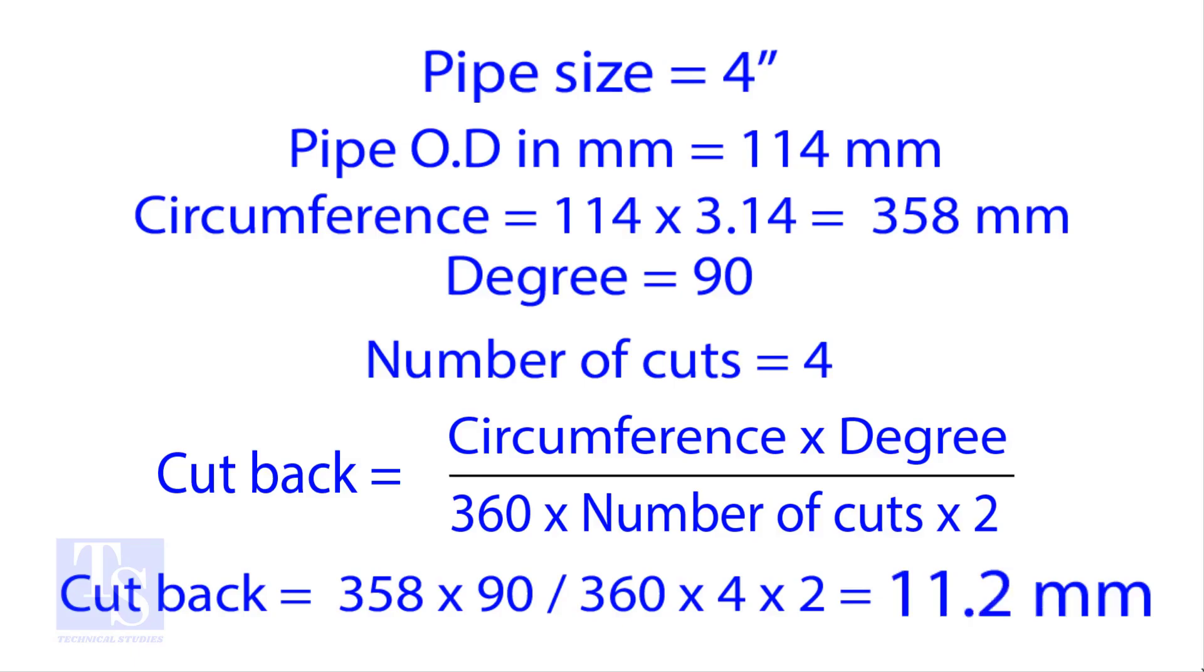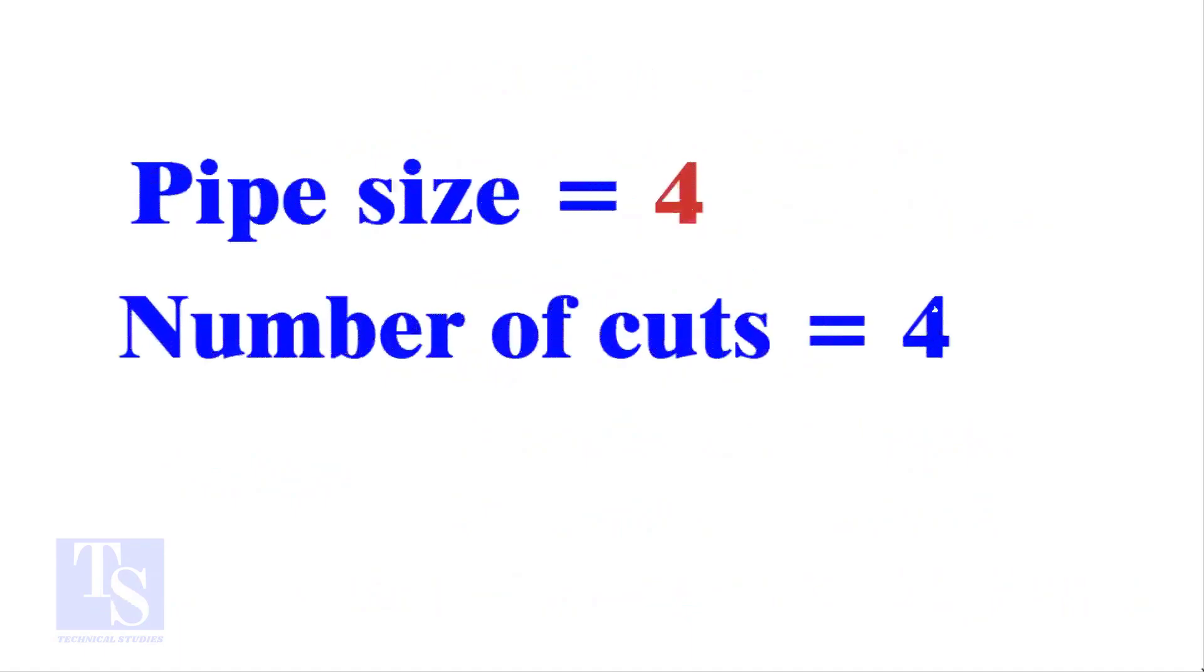Let us try the quick method. See the fast calculation method now. Let the pipe size be 4 inch and the number of cuts also be 4. Remember, you can use any number of cuts up to 9.